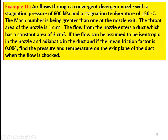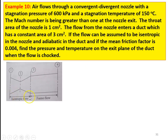Example number 10. Air flows through a convergent-divergent nozzle with stagnation pressure 600 kilopascal and stagnation temperature 150 degree Celsius. The Mach number is greater than 1 at the nozzle exit, so the flow at the exit of the nozzle is supersonic. The throat area of the nozzle is 1 centimeter square. The flow from the nozzle enters a duct with constant area of 3 centimeter square. The flow is isentropic in the nozzle and adiabatic in the duct, and the mean friction factor is 0.004. Find the pressure and temperature at the exit plane of the duct when the flow is choked.